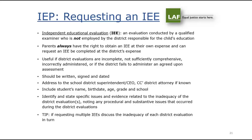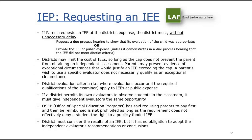Independent Educational Evaluations (IEEs) are evaluations conducted at the district's expense when a parent disagrees with the district's evaluation. You would request an IEE when evaluations are incomplete, not comprehensive, incorrectly administered, or when the district fails to administer an agreed-upon assessment. When you request an IEE, the district must respond within five days — either granting or denying the request. If denied, the district will file due process, so request all records before filing an IEE.